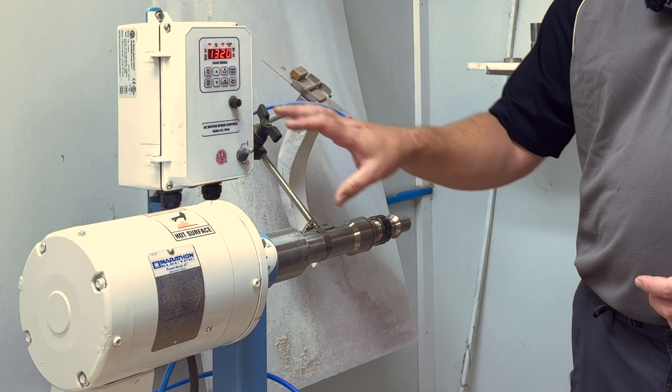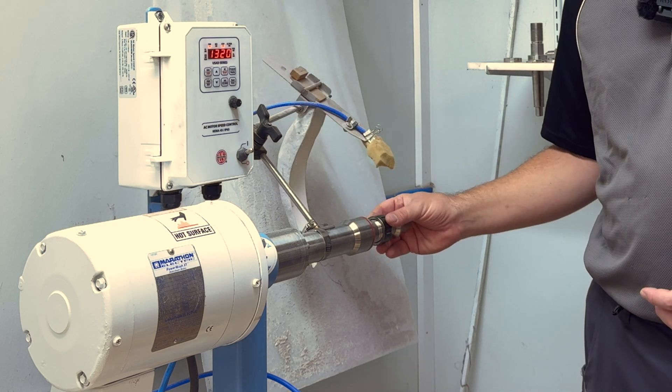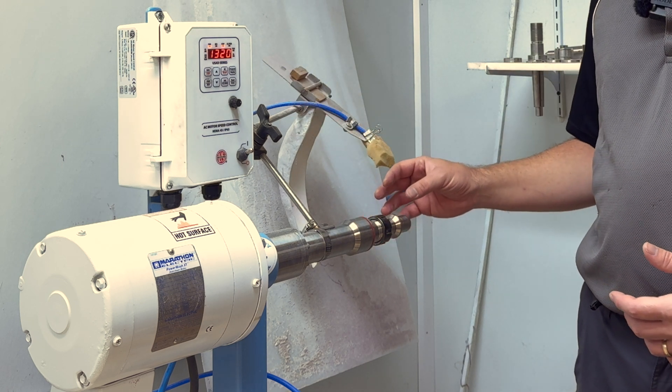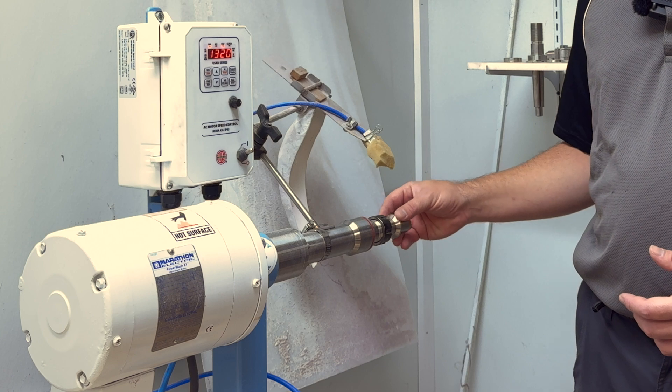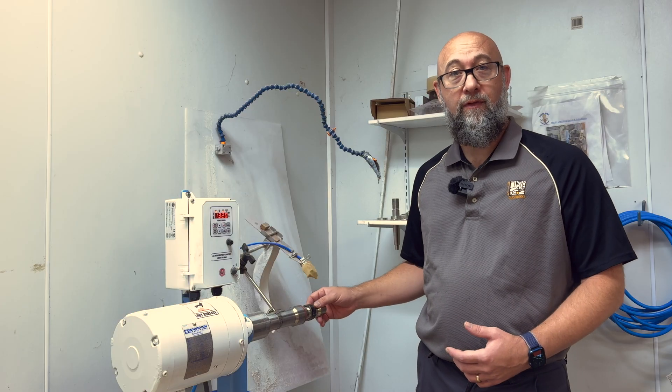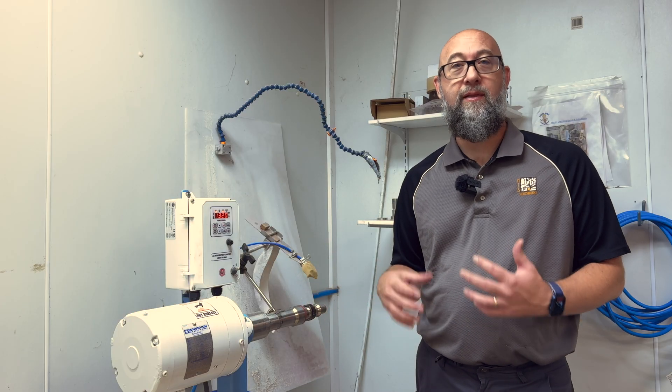It's a tabletop lathe, variable speed. It has an ER collet shaft on there, which means I can easily change out the bits on the end of this shaft to accommodate different things. Today we're going to be working with diamond wheels.